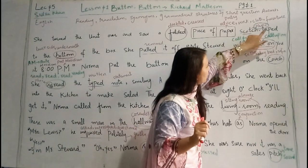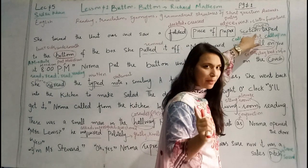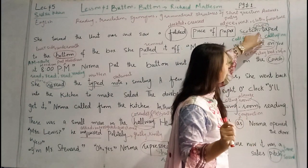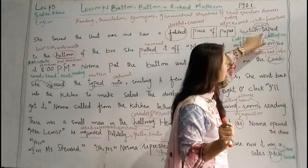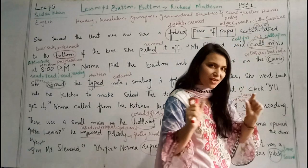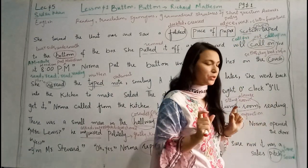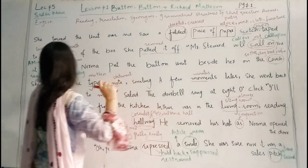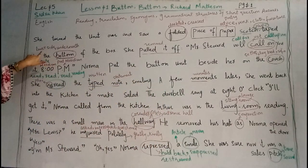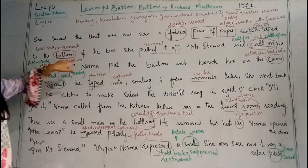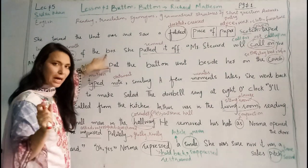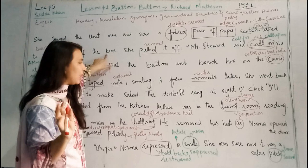Scotch tape — this is a compound word, which has a hyphen, and scotch tape is a plastic tape. To the bottom — bottom means lower side, underneath. And the box — box means container, parcel, dibba.